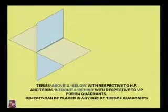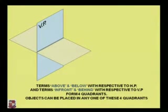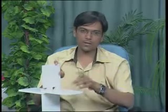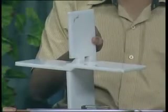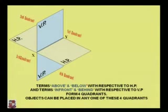These are the standard basic notations. Now I have a physical model of the horizontal plane and vertical plane. The vertical plane is shown in blue color and this is the horizontal plane. This is the XY line — the line which is the junction of the vertical and horizontal planes. There are four quadrants as explained earlier: first, second, third, and fourth quadrant.